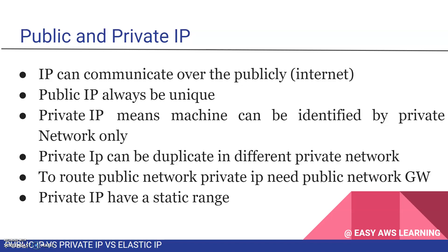Private IP is used for internal or private network communication. For example, if you have a wireless router with a laptop or mobile connected to it, the wireless router assigns private IPs. Those machines can communicate internally, but to reach the internet, the wireless router acts as the gateway and its public IP is used to communicate on the global public network.